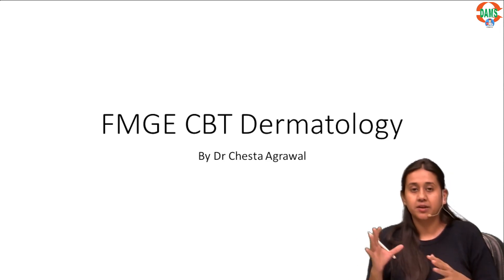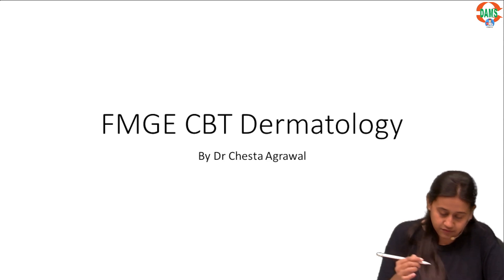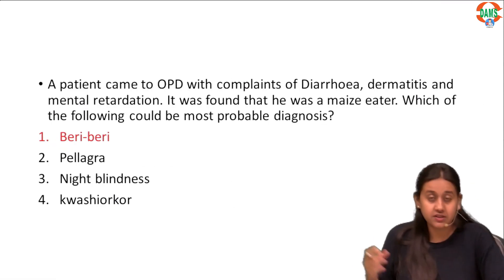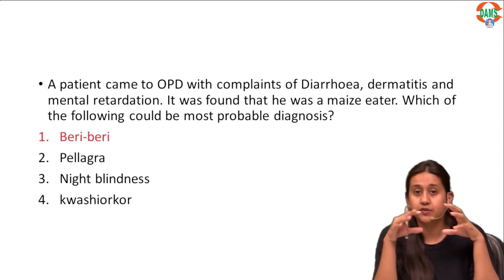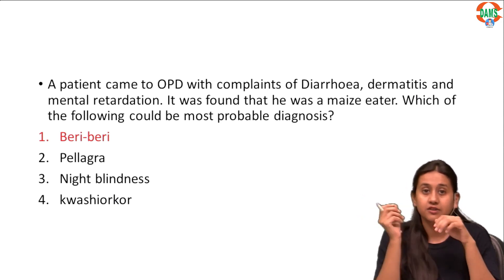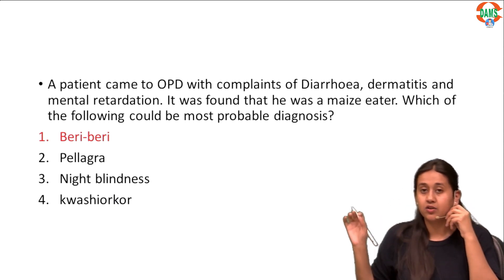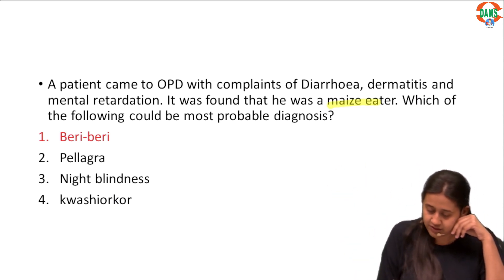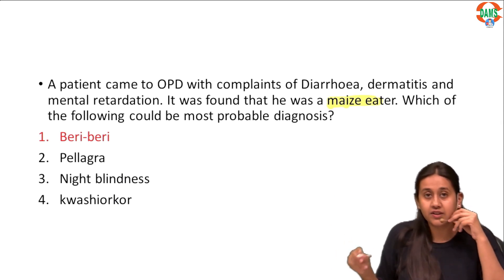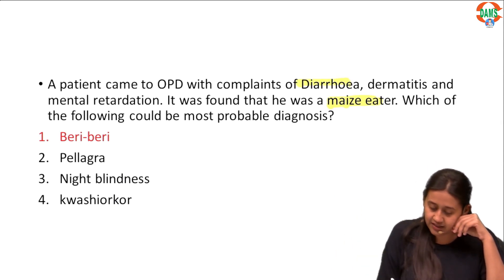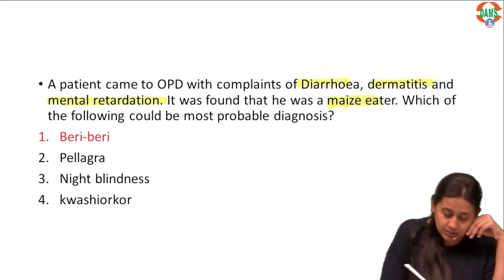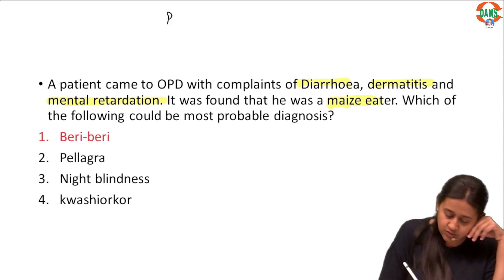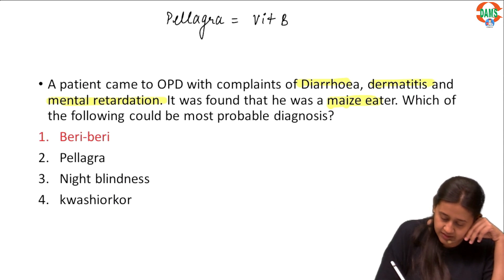Let's discuss the questions from this CBT from dermatology. The first question: a patient came to the OPD with complaints of diarrhea, dermatitis, and mental retardation. It was found that he was a maize eater. Which of the following could be the most probable diagnosis? There are multiple hints in the question: maize eater, along with diarrhea, dermatitis, and something related to the brain — dementia or mental retardation. Please remember there is a condition known as pellagra, which is vitamin B3 deficiency.